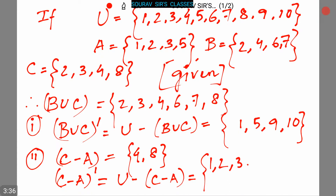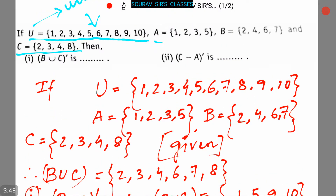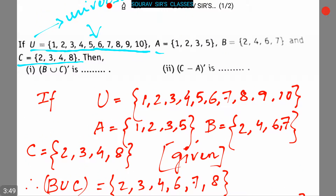From this we can see that (C−A)' is equal to {1, 2, 3, 5, 6, 7, 9, 10}. So this is our answer.